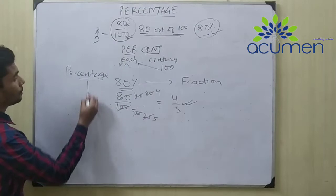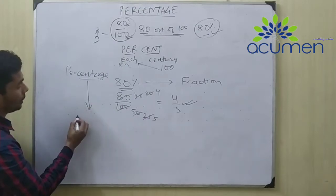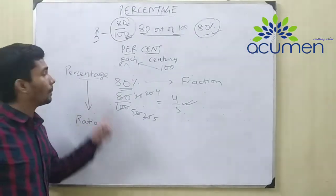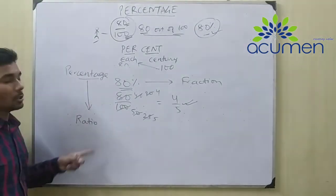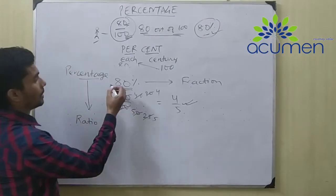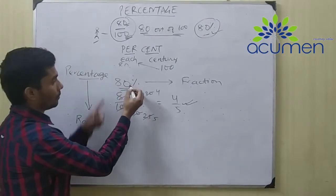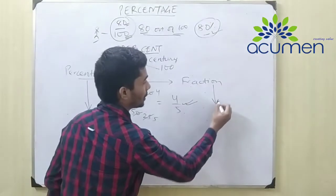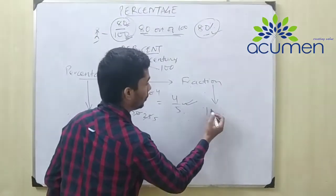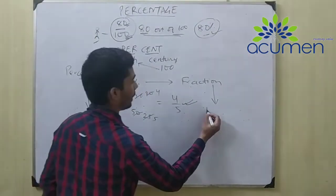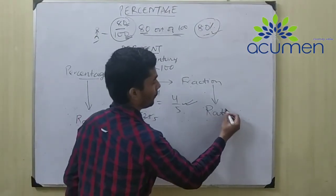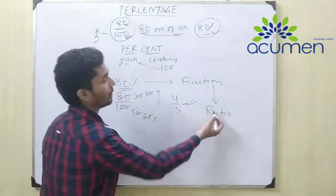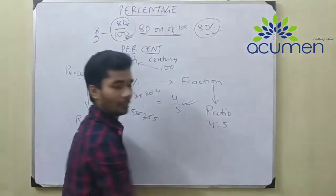We can also write a percentage in ratio form. To convert percentage into ratio, we first convert it into a fraction, and then from the fraction we write it in ratio form. So from 4 upon 5, we can write the ratio as 4 is to 5.